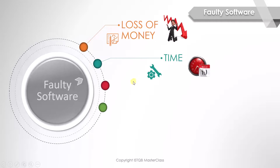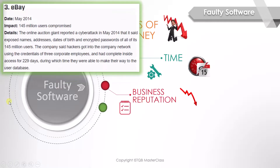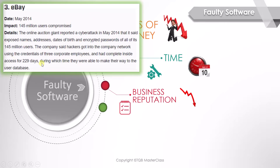The third consequence is your business reputation. To use another real life example, there was a hacker who had access to eBay's user database for 299 days. This was a breach of the security software.